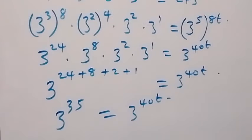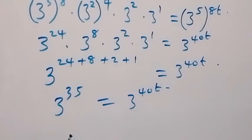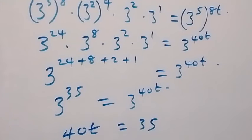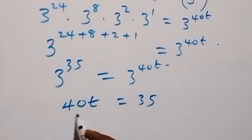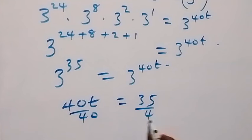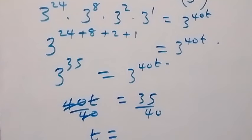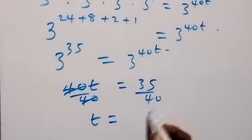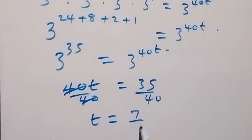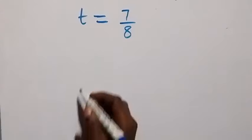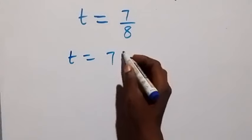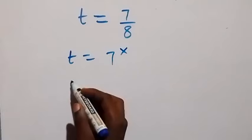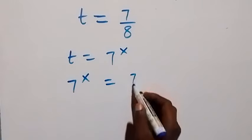Since we have the same base on both sides, we can equate the powers and say 40t equals 35. When we divide both sides by 40, the 40 cancels and t equals 35 over 40, which we can reduce to 7 over 8. Recall that t was defined as 7 raised to power x, so it means 7 raised to power x equals 7 over 8.